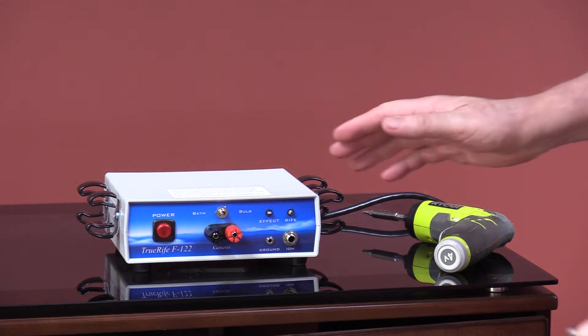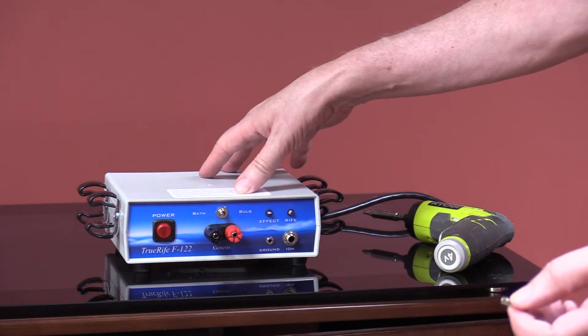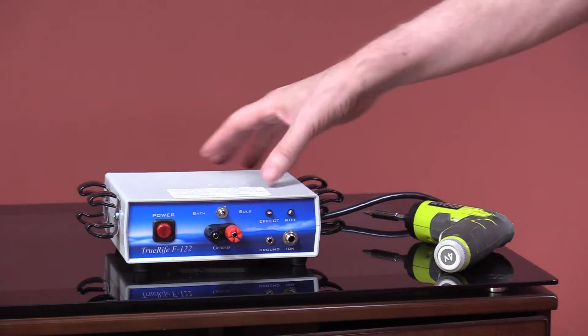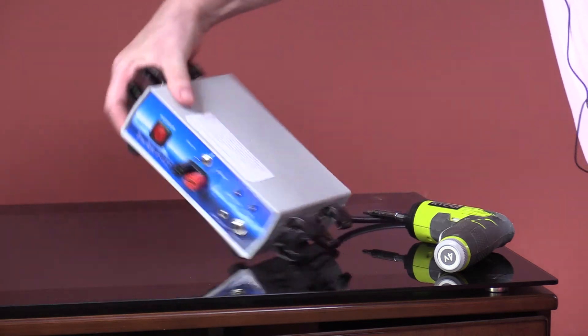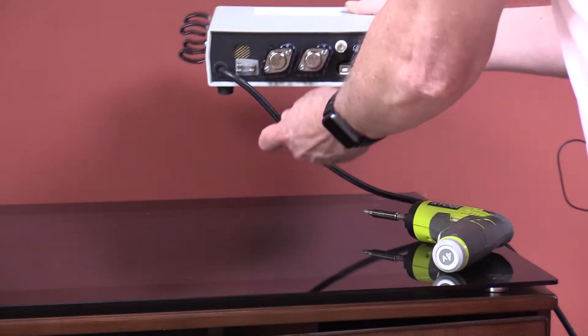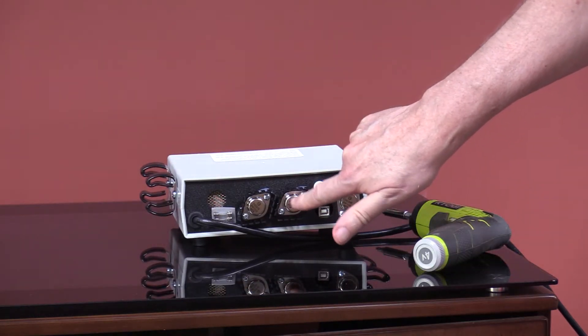But if a voltage surge manages to get into this device, it'll go past this fuse, and at that point it'll hit one of these transistors in the back. So we're going to turn it around now. On an F122, the transistor that usually gets hit is the right one—not every time, but most of the time it's right here.